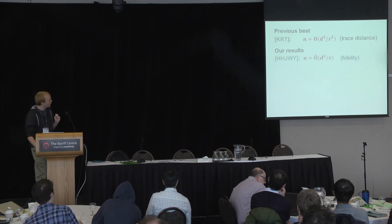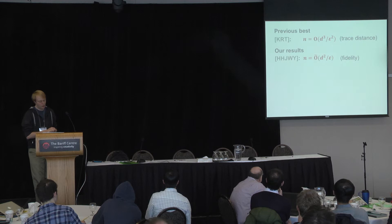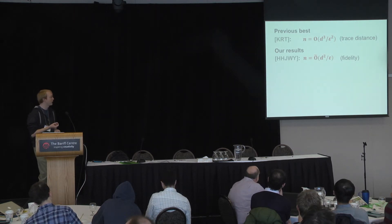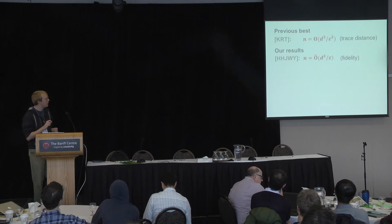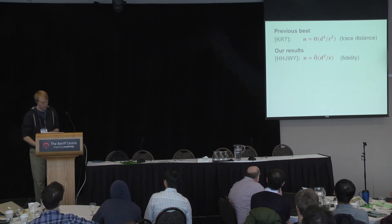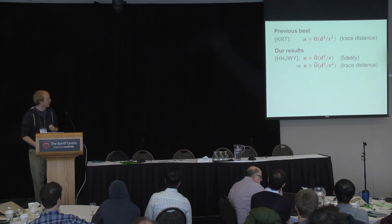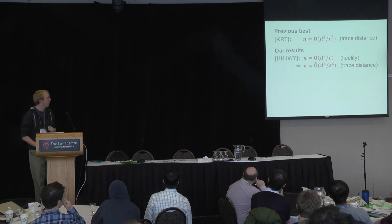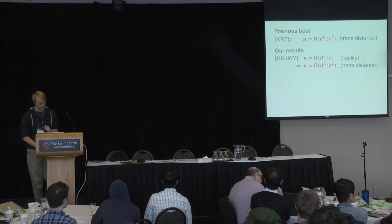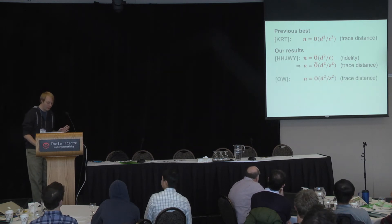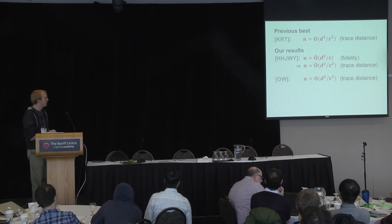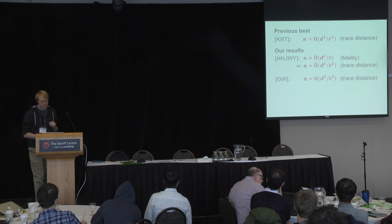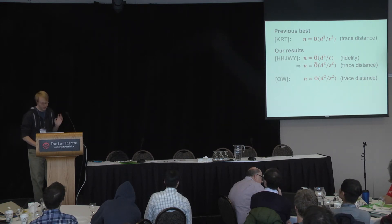Now let me tell you about our results. First, Ha et al.'s main result was that to get an epsilon-accurate estimate in terms of fidelity, it suffices to use O-tilde of d squared over epsilon copies, where tilde means I'm hiding logarithmic factors in d and epsilon. This immediately implies that, in terms of trace distance, all you need are O-tilde of d squared over epsilon squared copies. For my paper with Ryan, we got basically a similar result: to learn in trace distance you need d squared over epsilon squared copies — essentially the same result, although we save on the log factors. As you'll see in the second half of this talk, all these new results are basically optimal.